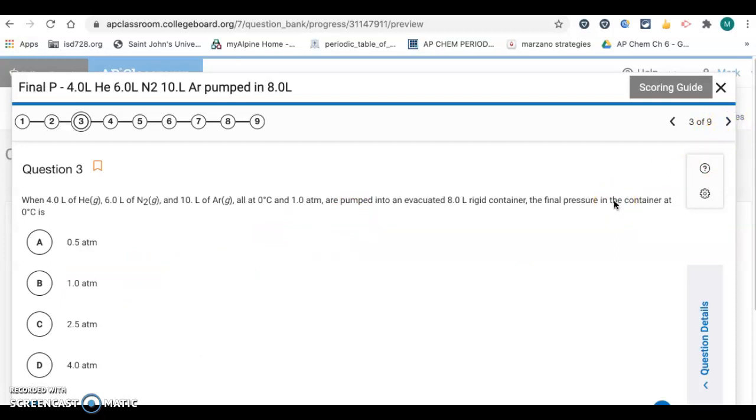Okay, question three. All right, so we're taking helium, nitrogen, and argon, and they all start off at zero degrees Celsius in one atmosphere. And we're putting them all into the same container. So this is Dalton's law, where if you have a mixture of gases, the final pressure, the total pressure in the container is just the sum of their partial pressures. All right, so what we want to do then is just figure out what's going to be the pressure of each of these individual gases based on how they change, and then just add those together.